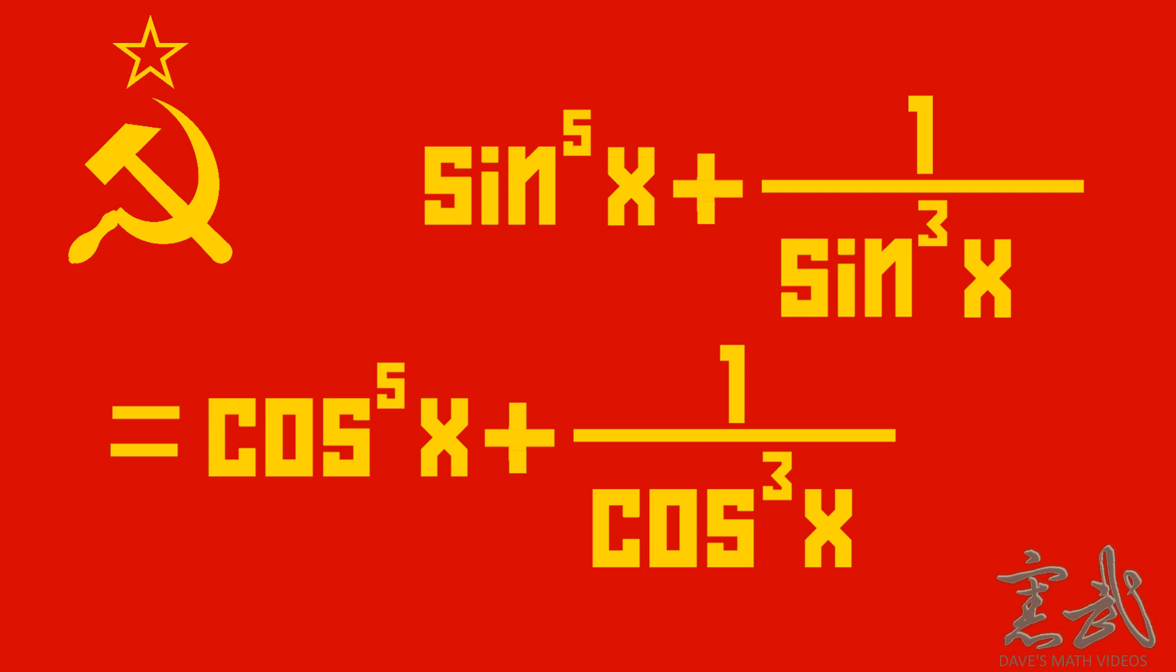Today we are going to be looking at a question from the Soviet Union. In particular, the question you see right here on the screen. The sine of x to the fifth power plus 1 over the sine of x cubed is equal to the cosine of x to the fifth power plus 1 over cosine cubed.